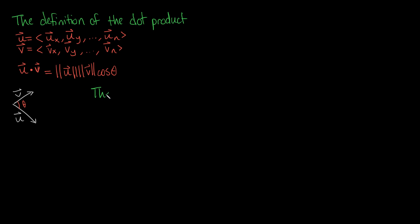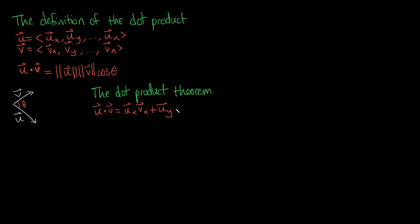And that is the dot product theorem. What the dot product theorem says is that u dotted with v equals the sum of their component products: the x component of u times the x component of v, plus the y component of u times the y component of v, plus all the other multiplications — the z's, the n's — coming to the nth term, un times vn.